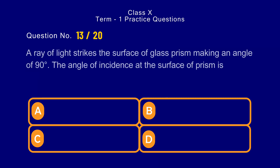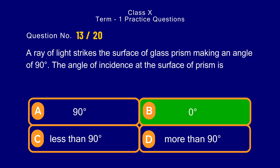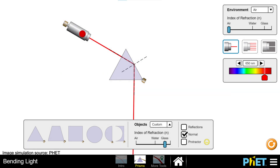Question number 13. A ray of light strikes the surface of a glass prism making an angle of 90 degrees with the surface. The angle of incidence at the surface of the prism is — options: a) 90 degrees, b) 0 degree, c) less than 90 degrees, d) more than 90 degrees. The correct answer is option b) 0 degree. The angle of incidence is the angle between the incident ray and the normal. The ray is falling perpendicular to the glass prism, thus making the angle of incidence 0 degree.